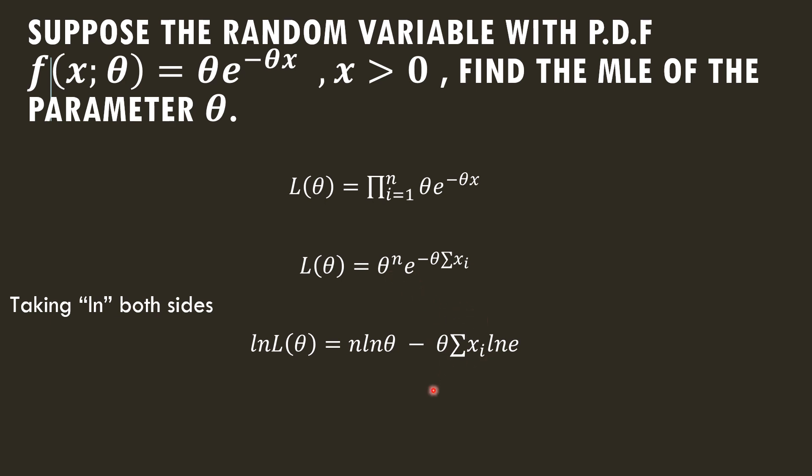Similarly, this term is also in the power, so minus θ summation xi. Now we would differentiate this function and equate it to 0 to get the MLE of the parameter θ.